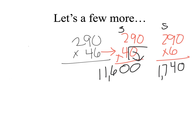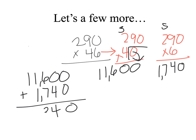I'll add my 2 partial products, 11,600 plus 1,740 to get my final answer. 6 plus 7, I'll regroup for the 13. And my product is 13,340.